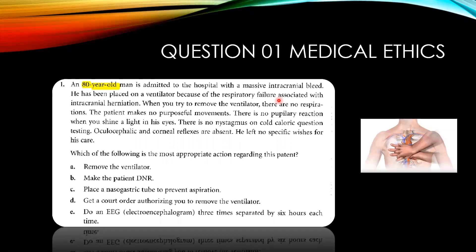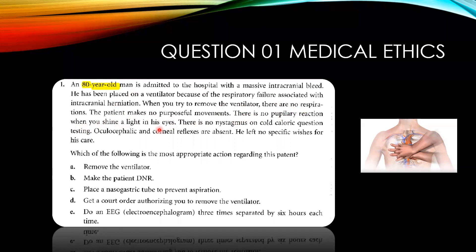Intracranial herniation even after a massive bleed is not very good news. The condition is deteriorating. When you try to remove the ventilator, there is no respiration. The patient makes no purposeful movement, no pupillary reaction when you shine the light in the eye. The patient is not showing any kind of proper reflex or responses.